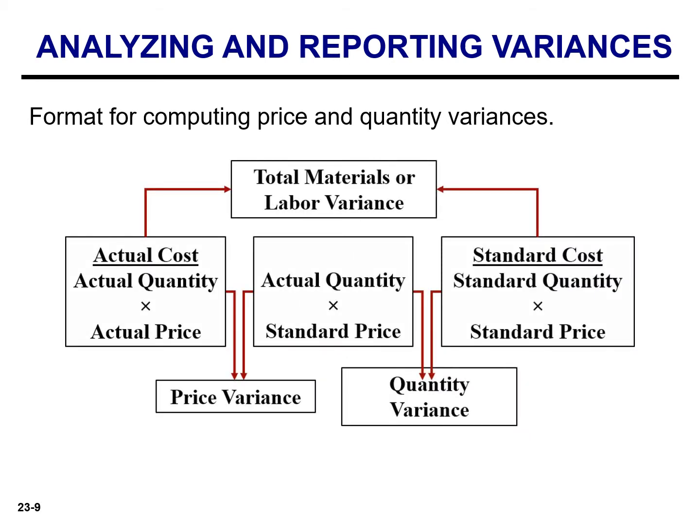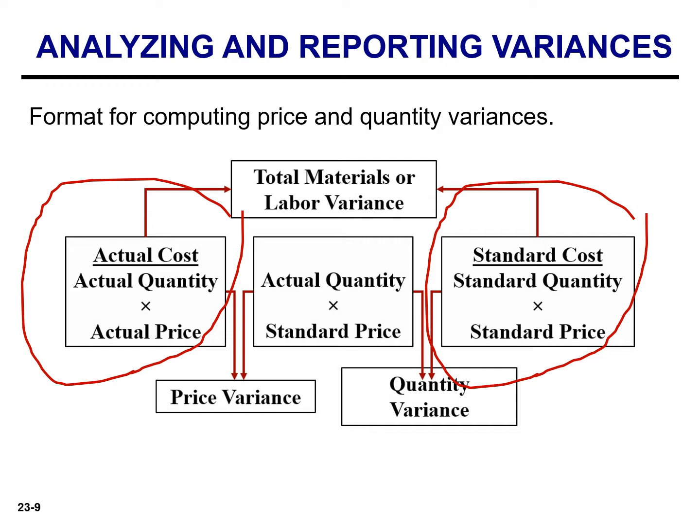The materials and labor variances are the sum of the variances resulting from price and quantity differences. Companies sometimes use a matrix to analyze a variance. The left side of the matrix is actual cost — actual quantity times the actual price — whereas the right side is the standard cost: standard quantity times the standard price. The only additional element needed to compute the price and quantity variances is the middle element: the actual quantity at the standard price.